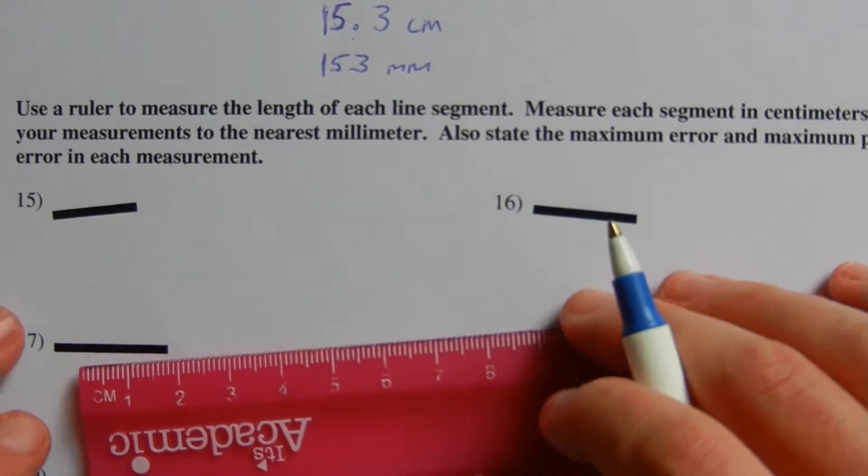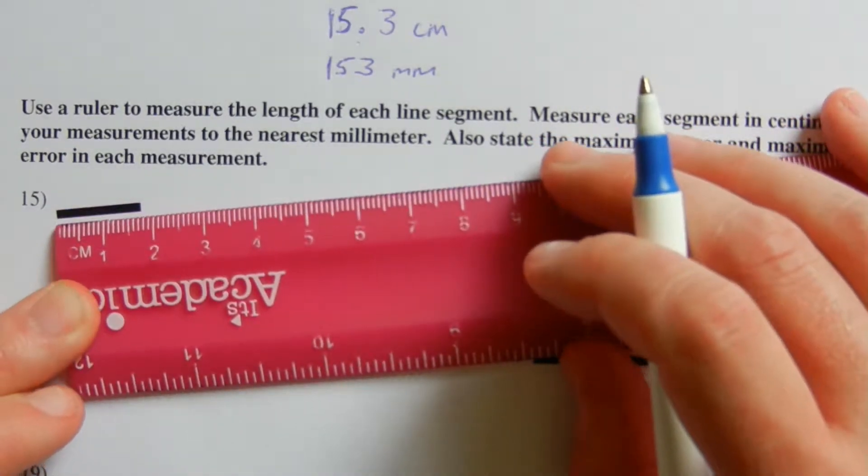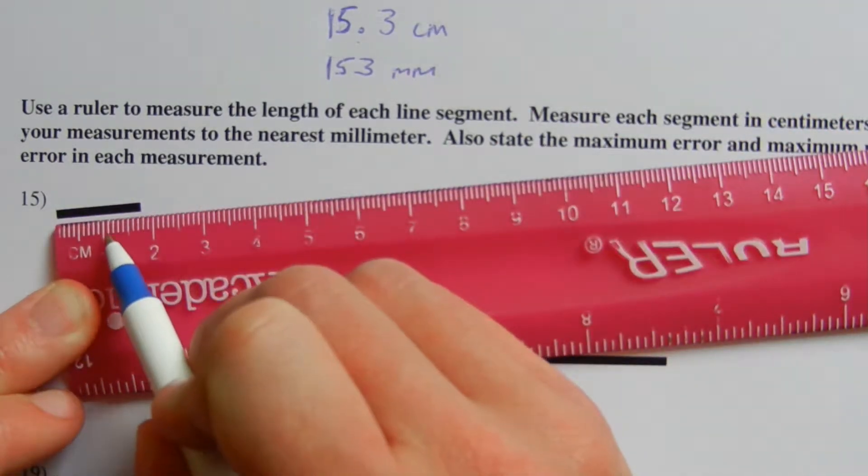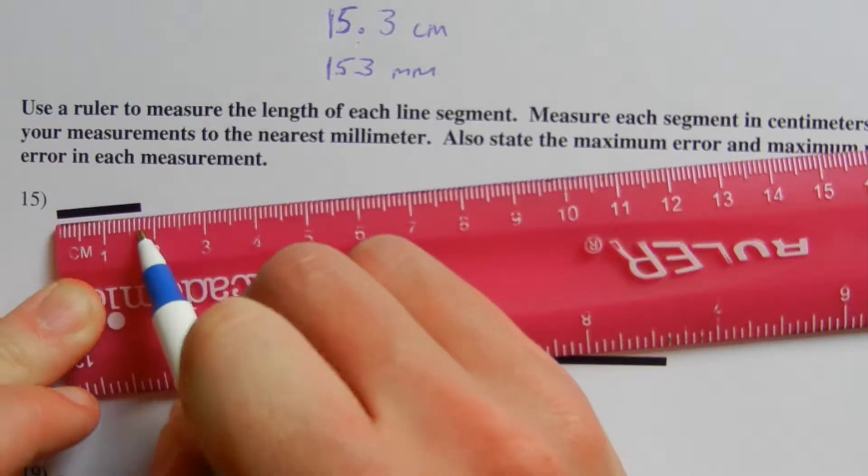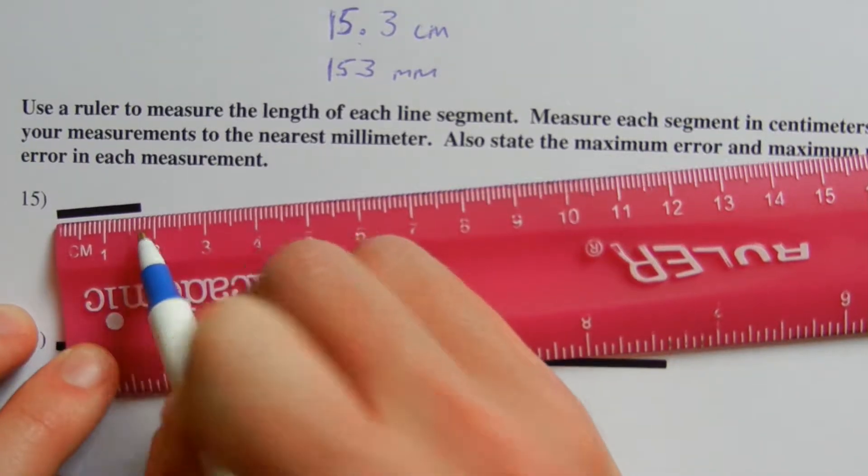So for number 15, measuring this, we get one centimeter and we're going seven millimeters past. So this is 1.7 centimeters.